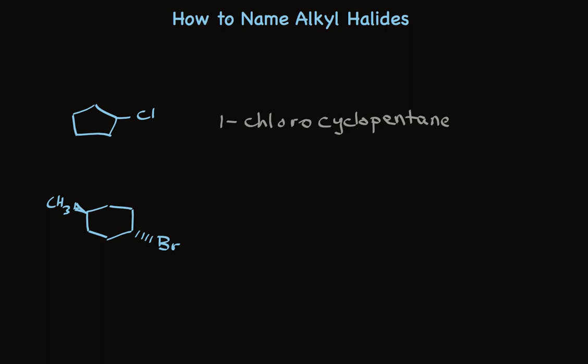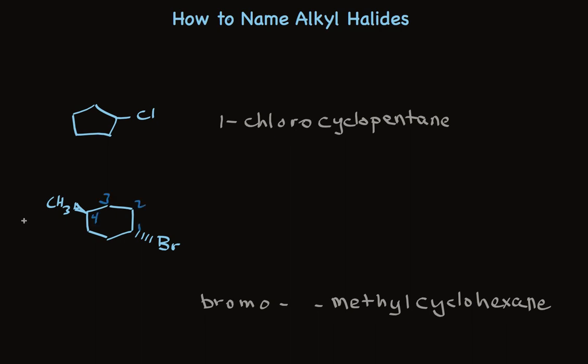Let's look at a slightly more interesting case. We have two substituents on a cyclohexane ring. We identify the substituents — bromo and methyl — and put them in alphabetical order in front of the name. Then we number the ring to indicate where the substituents are. Because bromine comes first alphabetically, we call the carbon bearing bromine carbon 1. So we put a 1 in front of bromo and a 4 in front of methyl. There are no stereogenic centers, but there's still stereochemistry — we must say whether the substituents are on the same or opposite sides of the ring. In this case they're on opposite sides, so we call it trans. The full name is trans-1-bromo-4-methylcyclohexane. Using systematic nomenclature as applied to alkanes, we can name all the alkyl halides.